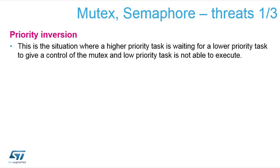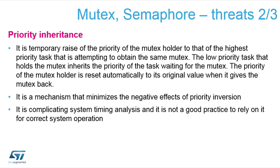If a lower priority task owns the mutex and a higher priority task waits for it, the high priority task would normally get priority in running. However, the lower priority task must reach the running state so it can release the mutex for the high priority task. If this were not handled, a priority inversion would occur, deadlocking execution. FreeRTOS prevents priority inversion through priority inheritance — automatically and temporarily raising the lower priority task's priority when a higher priority task is waiting for its resource.